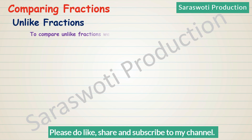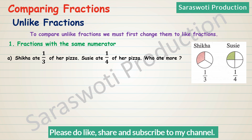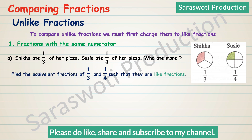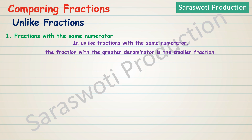Unlike fractions. To compare unlike fractions, we must first change them to like fractions. Fractions with the same numerator — for example, Shikha ate 1/3 of her pizza and Sushia ate 1/4 of her pizza. Who ate more? Find equivalent fractions of 1/3 and 1/4 such that they are like fractions. 1/3 = 2/6 = 3/9 = 4/12. 1/4 = 2/8 = 3/12. Therefore, 4/12 > 3/12, so 1/3 > 1/4. Shikha ate more. In unlike fractions with the same numerator, the fraction with the greater denominator is the smaller fraction.